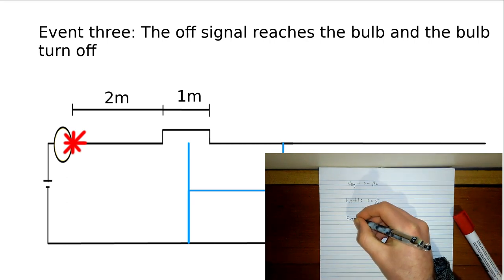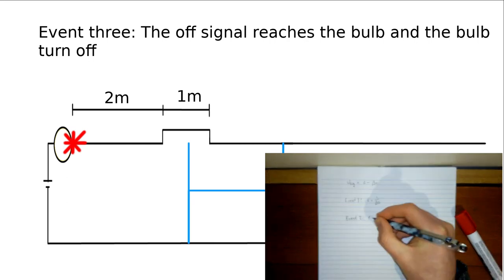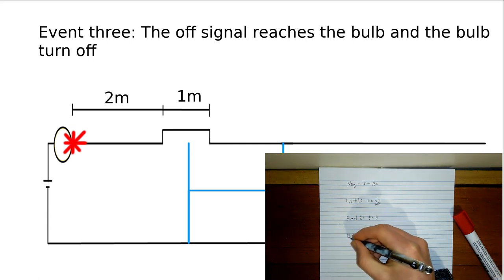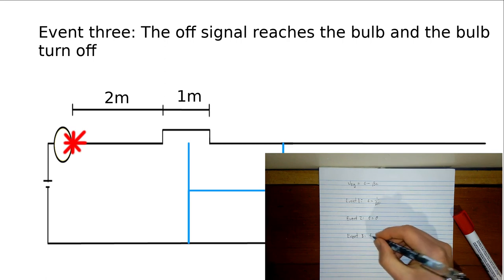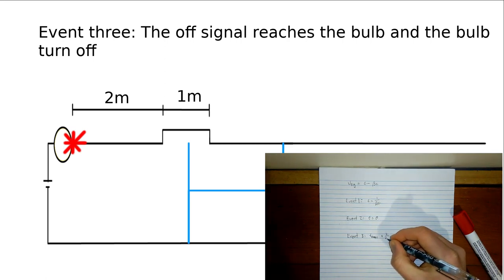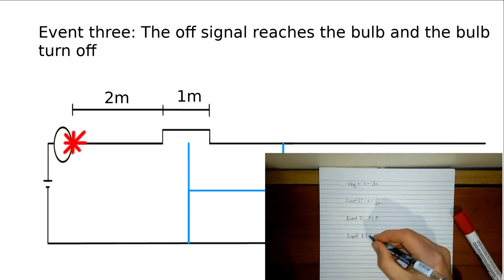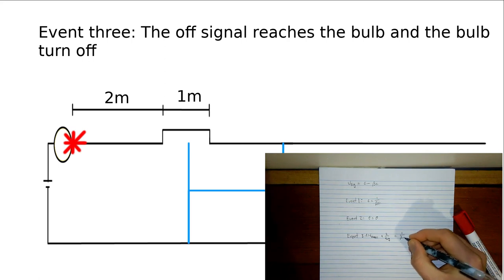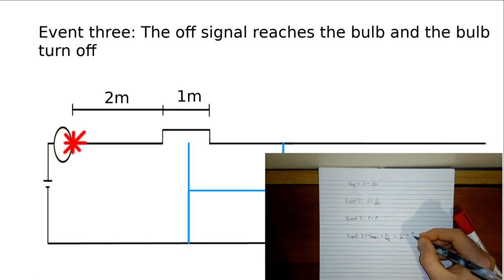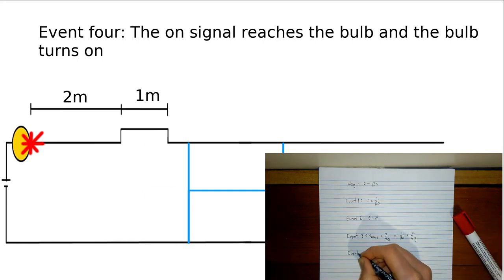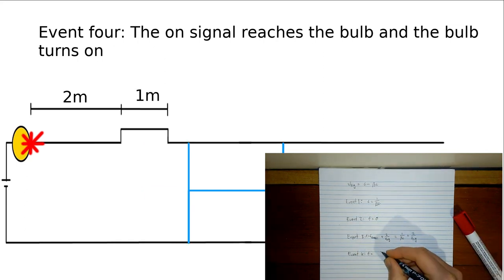Now, the signal must propagate within the rail, but the rail is already travelling a significant portion of c. The signal must therefore travel at c minus beta c. So, event 3 occurs at 1 divided by beta c plus 2 divided by c minus beta c, or approximately t equals 5.4 times 10 to the negative 8 seconds.